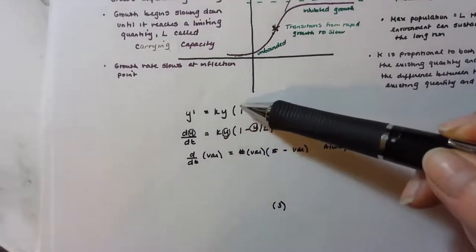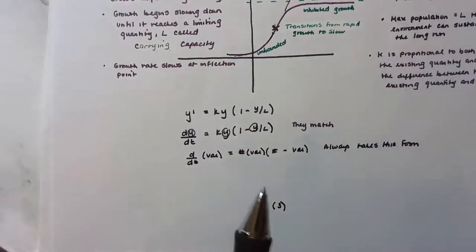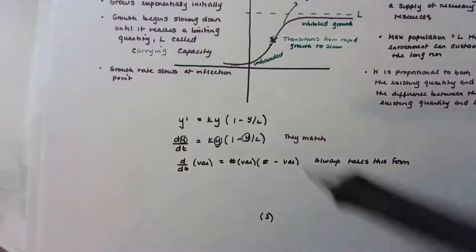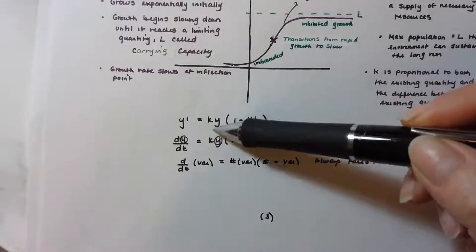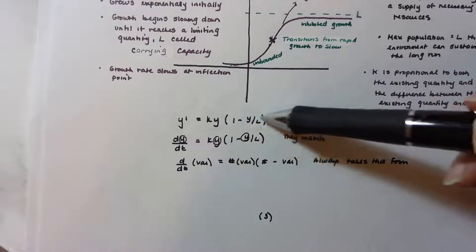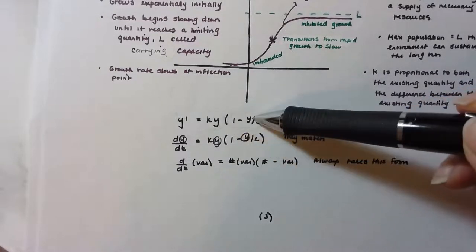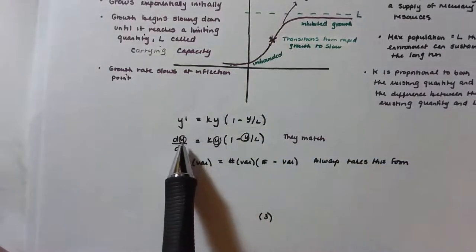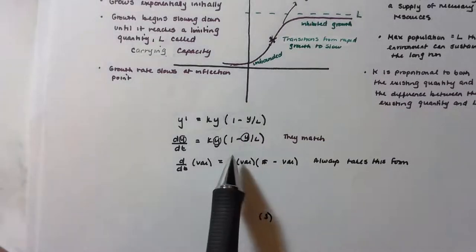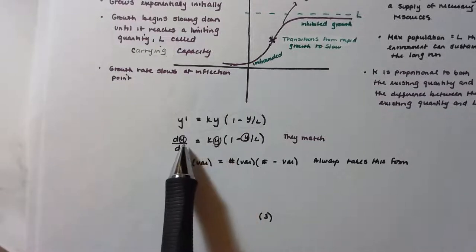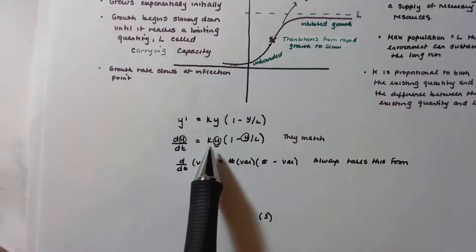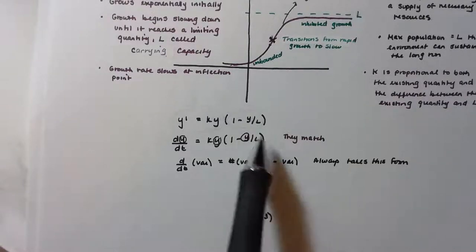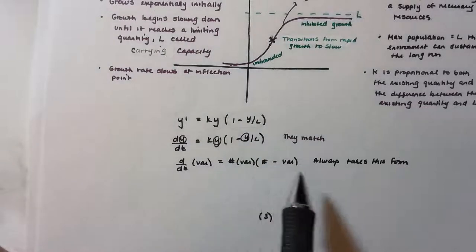The logistic differential equation is: dy/dt = ky(1 − y/L). The ky part represents exponential growth, and the (1 − y/L) part represents the slowing-down effect. A key way to recognize a logistic equation: d/dt of a variable equals a constant k times that same variable, times a number minus that same variable. All three terms must be the same variable.